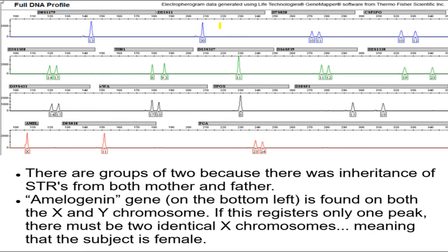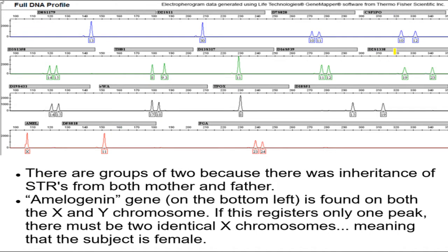That's how we can identify one single person. If the crime scene DNA profile and the one from the suspect are the same for all these peaks, then we know that's got to be the person who was at the crime scene. The numbers there aren't really relevant for our discussion, but we can see the different STRs that are used, and each one has their own place where the peak comes out.